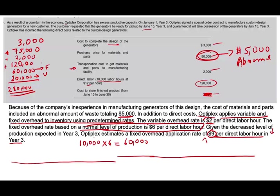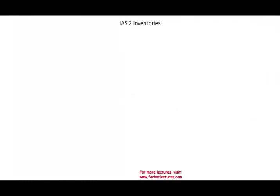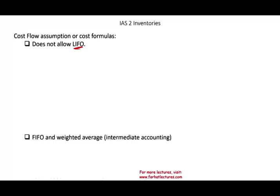Now let's look at a few other topics that deal with inventory. We have to worry about the cost flow assumption. If you remember FIFO, LIFO, weighted average, and specific identification — for one thing, IFRS does not allow LIFO. As far as IFRS is concerned, LIFO is not permitted — they don't allow last-in, first-out.